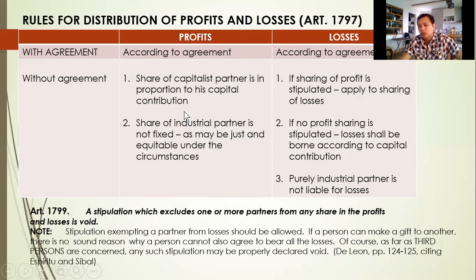Without agreement, the capitalist partner's share in the profits is in proportion to his capital contribution — it will be based on what he contributed. However, in the case of industrial partners, since they have no capital contribution, they will receive a share of profits which is just and equitable under the circumstances.